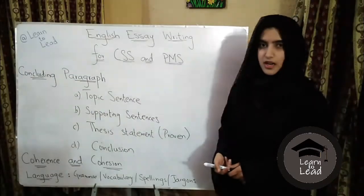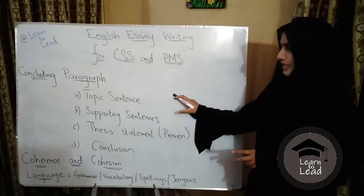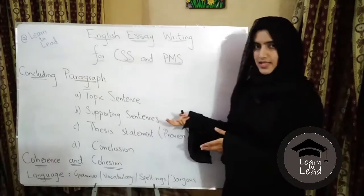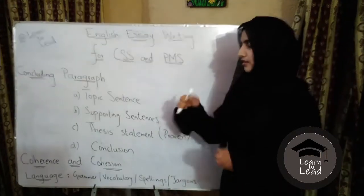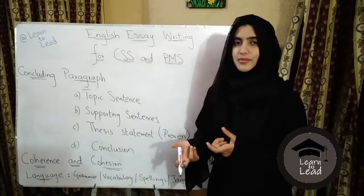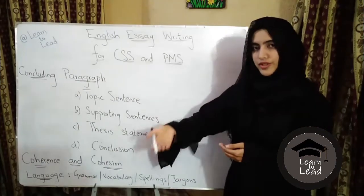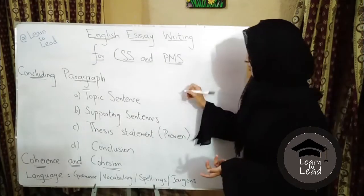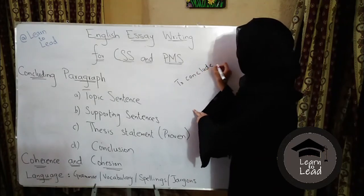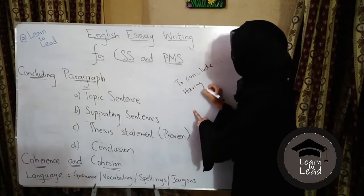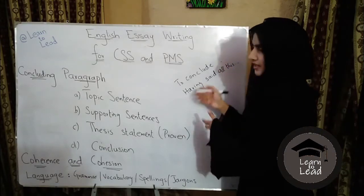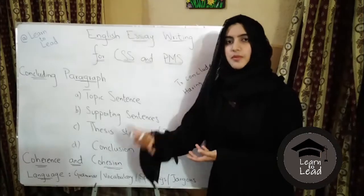Let's see how the concluding paragraph is written in English. As I told you in the video about body paragraphs, the topic sentence will start the paragraph. But before you start this paragraph, you will use connecting words. You should know that the essay is moving towards the conclusion. You can write 'to conclude,' or 'having said all this,' or 'finally,' or 'in the end.' If you are using these words, the reader will know that you are going to complete your essay.